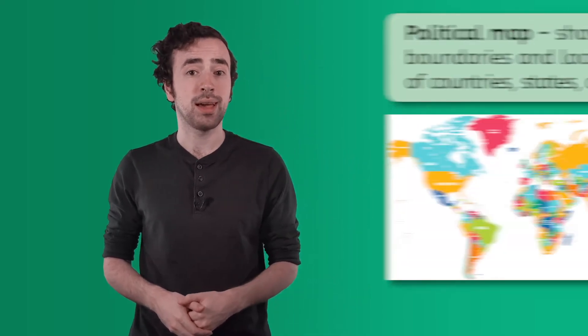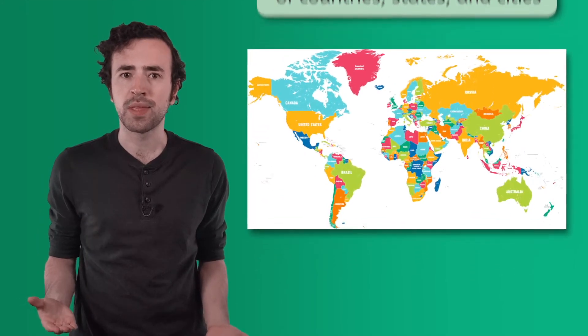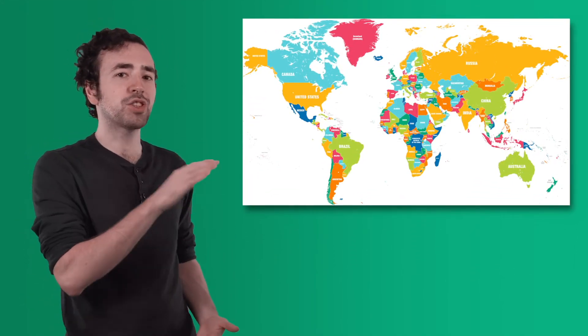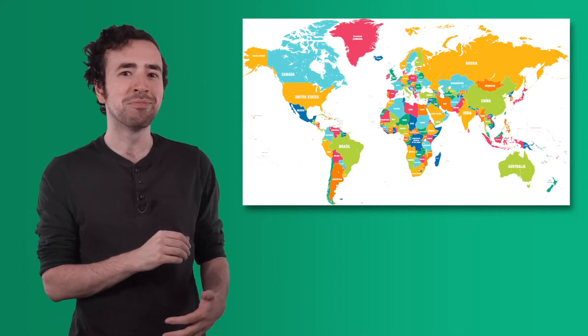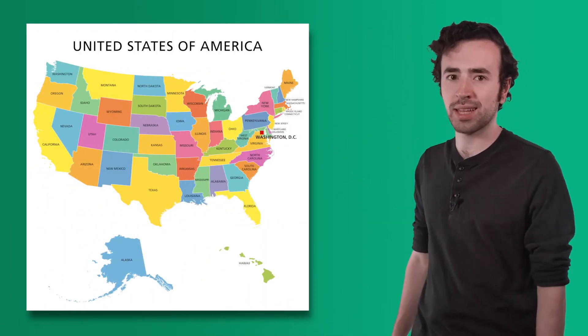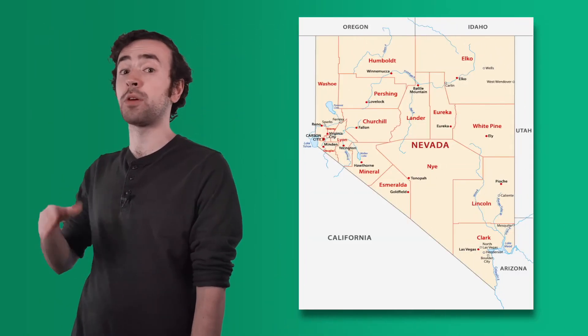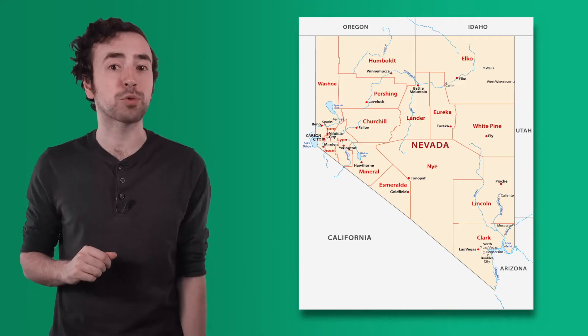A physical map shows details of the Earth's surface, but other types of maps show us other important markers people have made. A political map helps us see the boundaries of countries and cities, like where we live. Can you see the shapes of each country on this map of the world? We can also tell them apart because they're different colors. How about this map of the United States? Can you see the shape of each state? If you look at a map of your state, you may even be able to find the boundaries of your county.